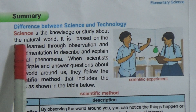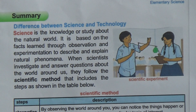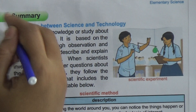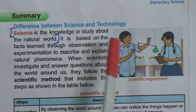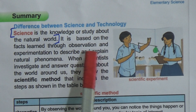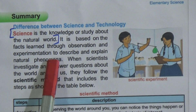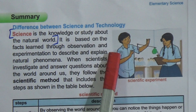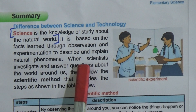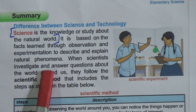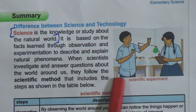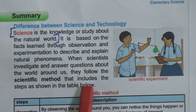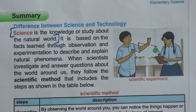Now the summary: the difference between science and technology. Science is the knowledge or the study about the natural world. It is based on facts learned through observation and experimentation to describe and explain natural phenomena. When scientists investigate and answer questions about the world around us, they follow the scientific method, which includes the steps shown in the table below.